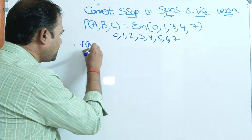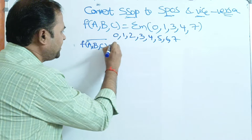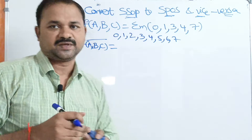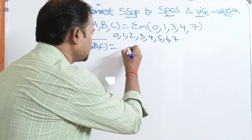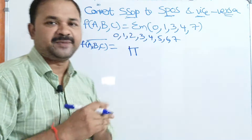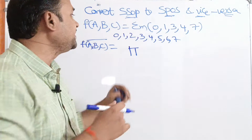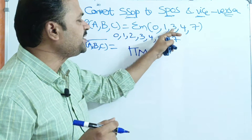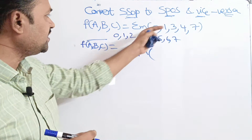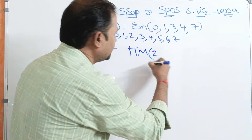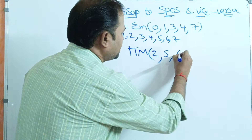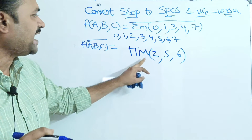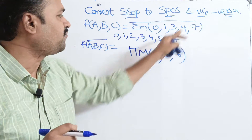So F of A, B, C whole complement equals: here sigma is converted to pi — sigma means sum, pi means product. Small m means minterm, and m bar means capital M — capital M means maxterm. Next, we have to perform complement of 0, 1, 3, 4, 7. So what are the terms which are not present here? 2 is not there, 5 is not there, 6 is not there.